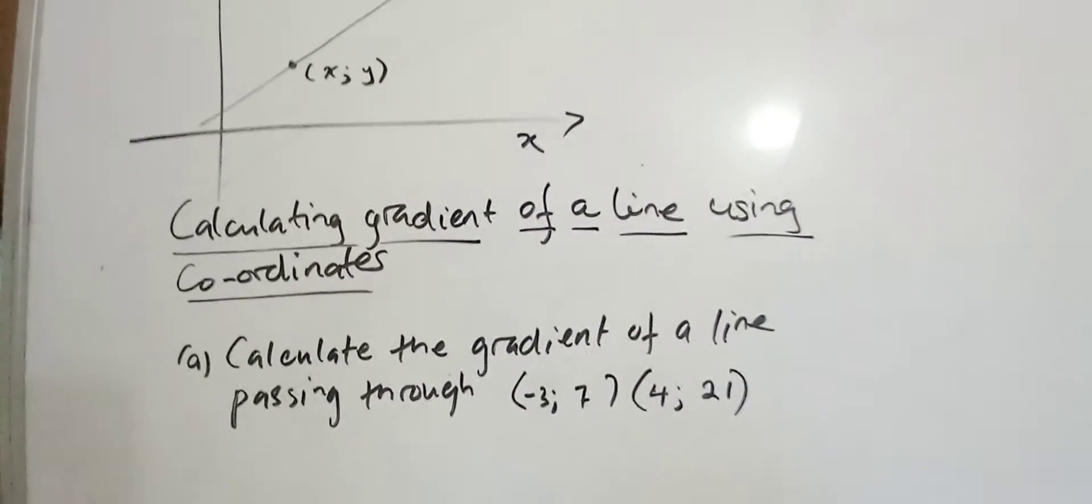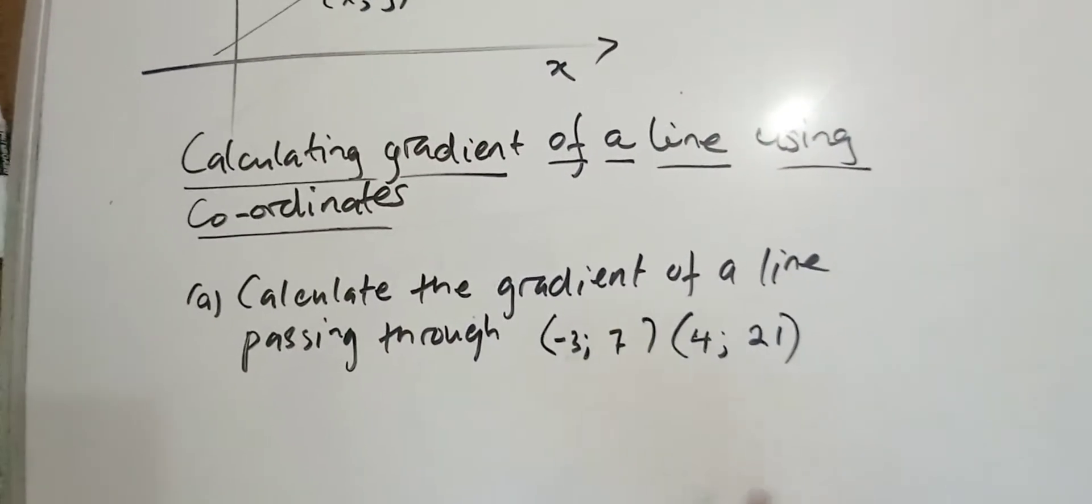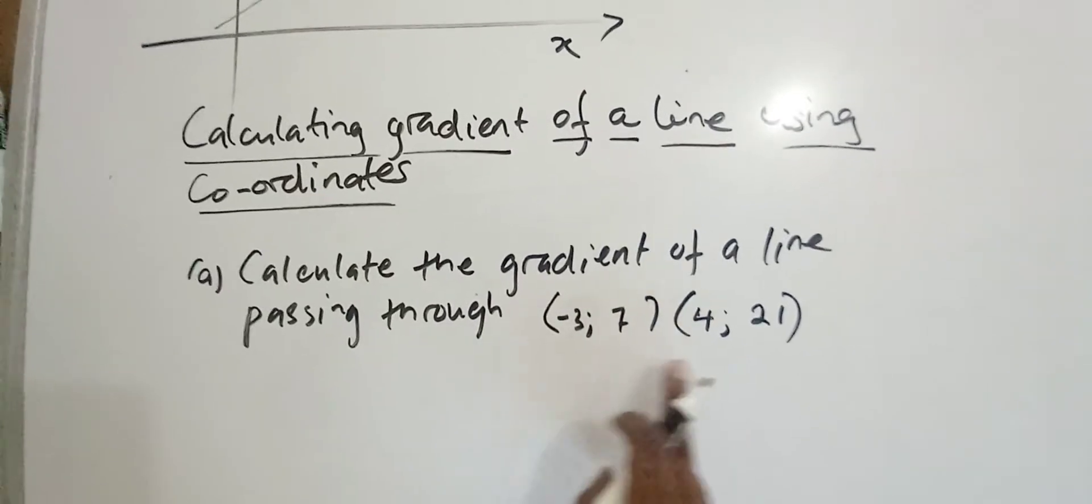Now, in another scenario, you may be asked to calculate the gradient of a line passing through (-3, 7) and (4, 21).